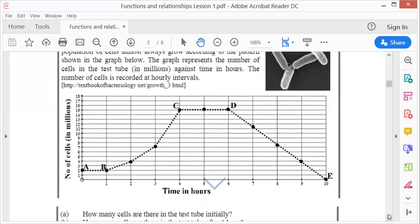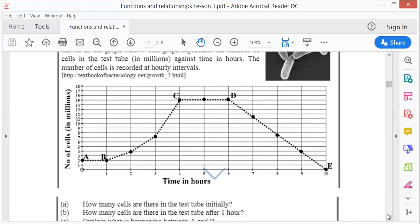The first question is, how many cells are there in the test tube initially? Initially means in the beginning. So it is here where time is zero. And where is the dot? At two. So it should be 2 million bacteria. How many cells are there in the test tube after one hour? So you go now one hour, you go up and across. So it is still, after one hour, it is still 2 million. Can you see?